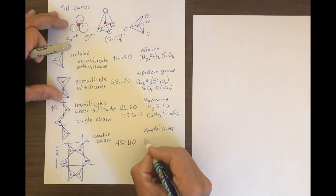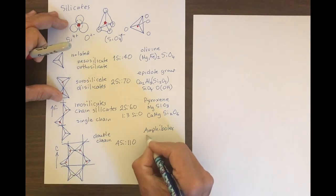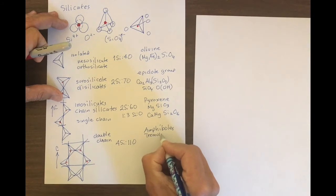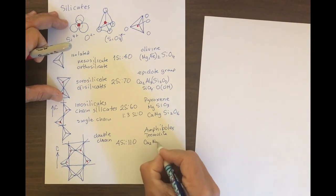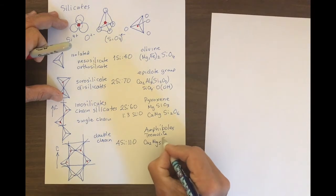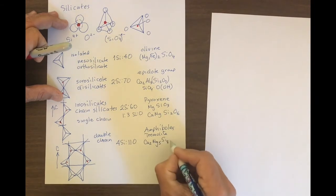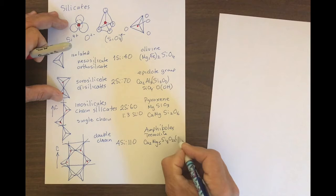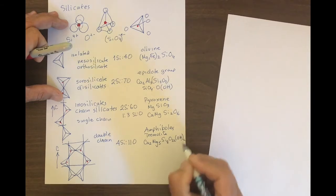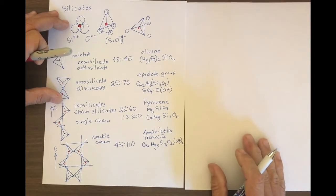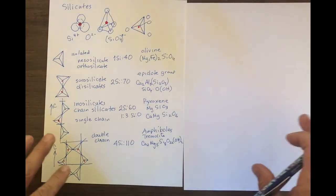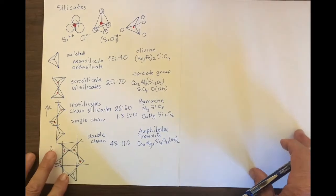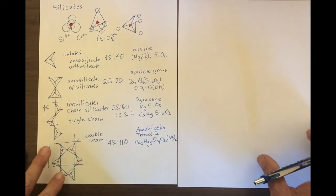A common amphibole would be tremolite, which has the formula Ca2, Mg5, Si8, O22, (OH)2. Now we're going to turn to slightly more complicated linked chains. As the number of silica tetrahedra that are linked increases, the silica to oxygen ratio decreases.